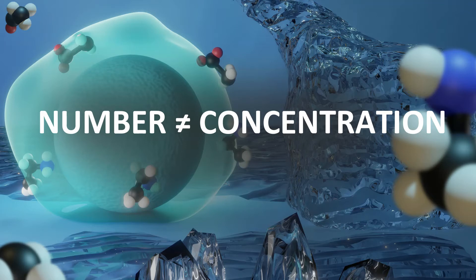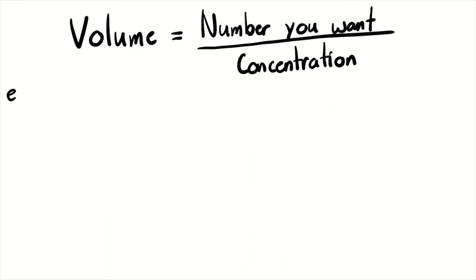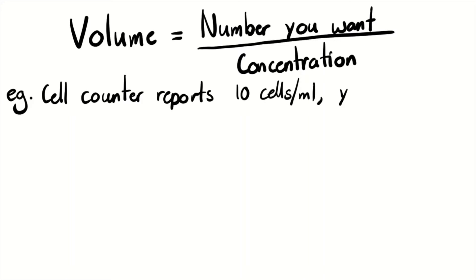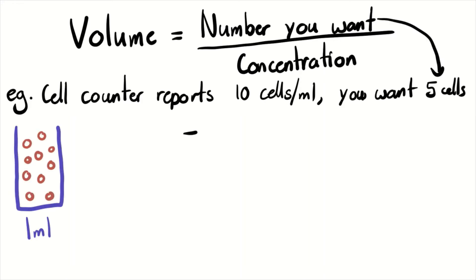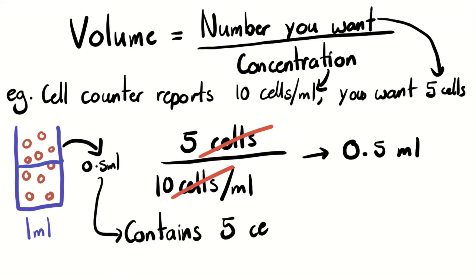You want to subculture 5 cells — what volume contains 5 cells? That volume is equal to the number of cells you want divided by the concentration. So if your cell counter reports 10 cells per mil and you want 5 cells, the volume equals 5 cells divided by 10 cells per mil. The units cancel out, leaving 5 divided by 10 per mil, which equals 0.5 mils or 500 microliters. Taking 500 microliters of your cell suspension would contain 5 cells to put into your new flask.